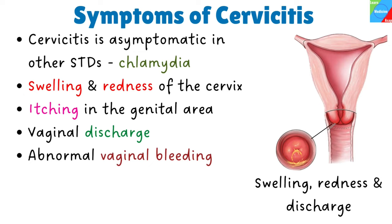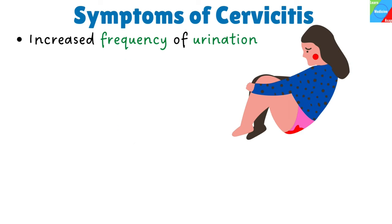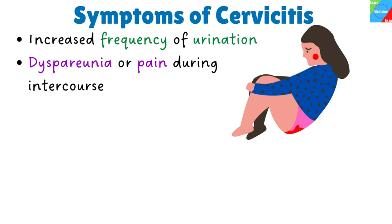Abnormal vaginal bleeding may be post-coital, intermenstrual, or post-menopausal. Other symptoms include increased frequency of urination, dyspareunia or pain during intercourse, and sometimes ulceration.